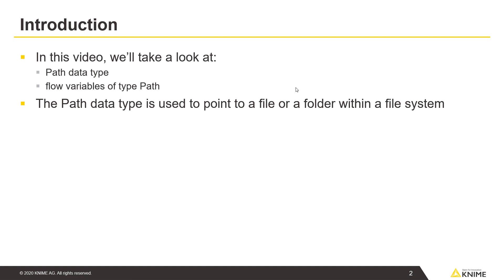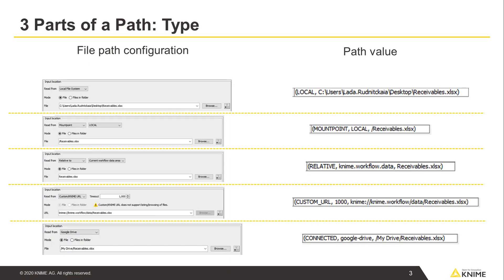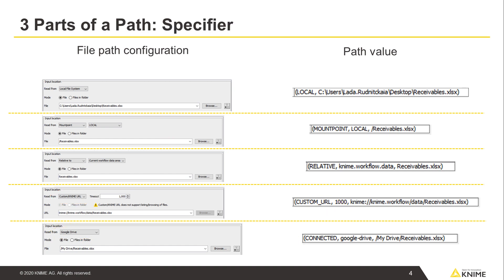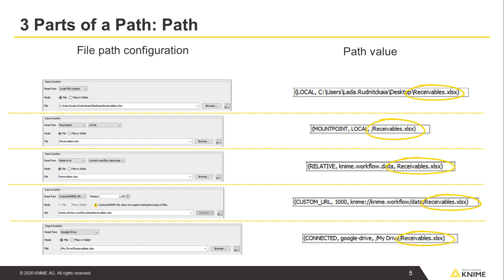The path data type is used to point to a file or a folder within a file system. The path type consists of three parts. The type specifies the file system type, which can be local file system, mount point, relative to, custom or KNIME URL, or connected. The specifier provides additional file system specific information, for example, the relative location or the name of the mount point. The path specifies a location within the file system and a file or a folder name and extension.